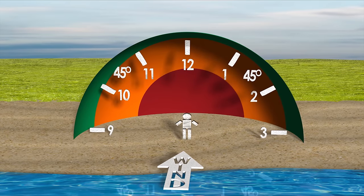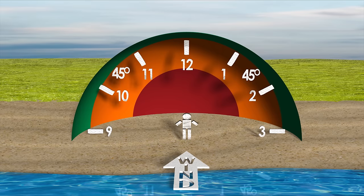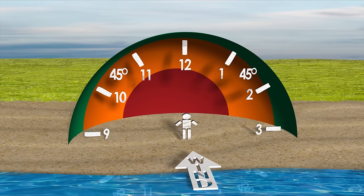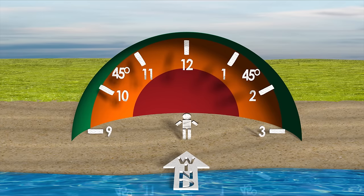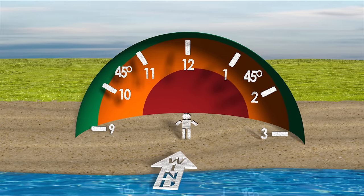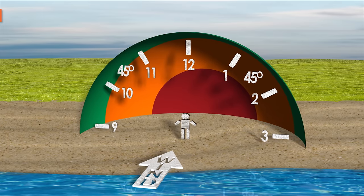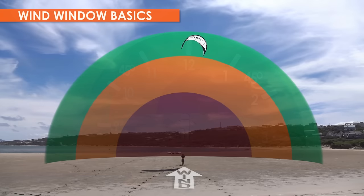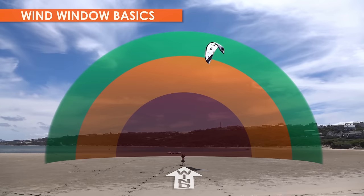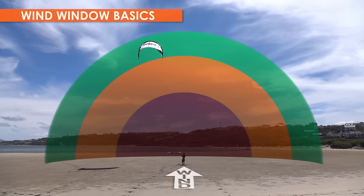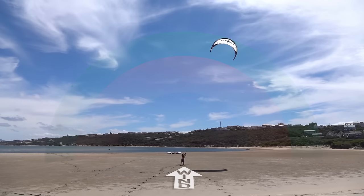The wind window is a fundamental concept in kite surfing. Understanding the wind window will help you a lot as you begin your lessons. The window is the space in which your kite can fly. It is located on your downwind side, never on your upwind side.